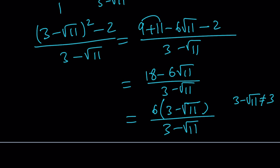I was supposed to write does not equal 0. Obviously, it's not equal to 3 either, but that's not the point. 3 minus root 11 cancel out, and we end up with 6 for the value of x minus 2 over x. And this time, we used a different x value.